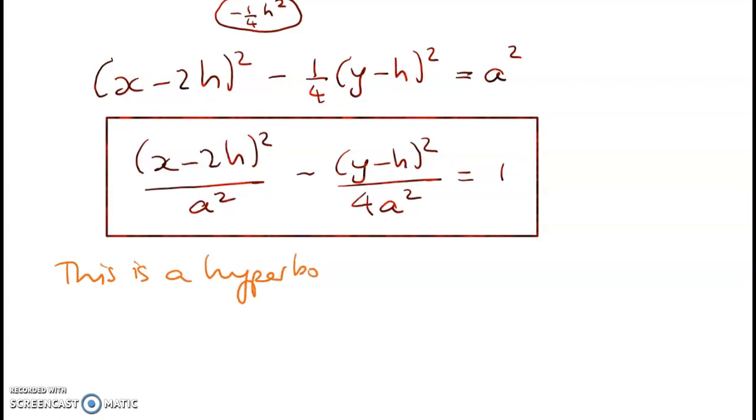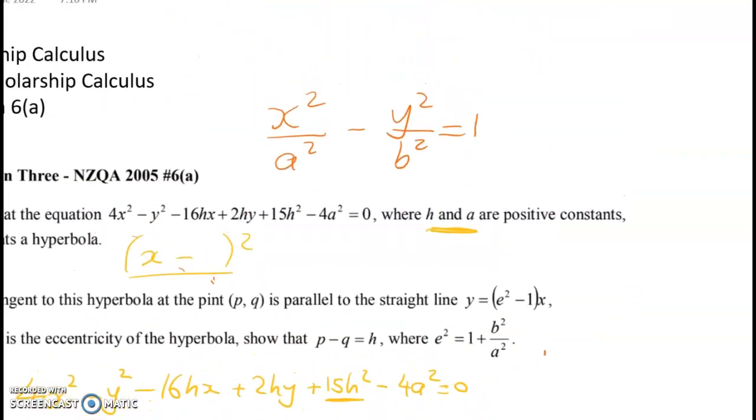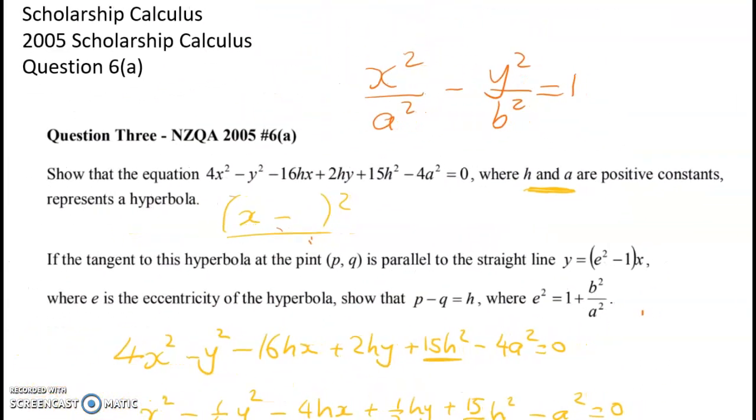I think we should say the center. So the center is at 2h and h, and we've got a squared is a squared - that's a bit stupid writing that but there you go - and b squared is equal to 4a squared. All right that's the first part done.